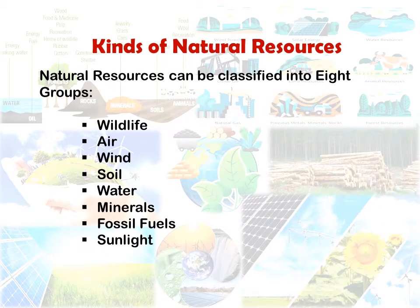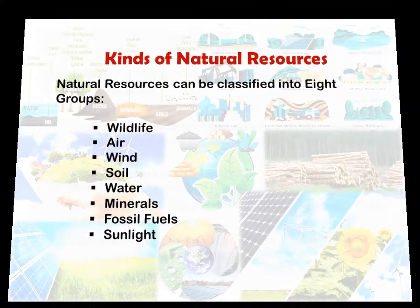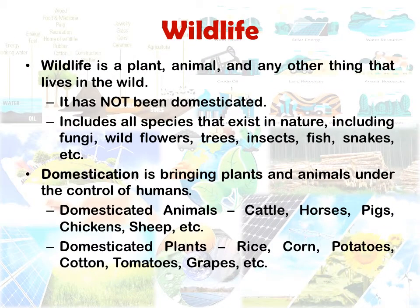There are different types of natural resources, divided into eight groups: wildlife, air, wind, soil, water, minerals, fossil fuel, and sunlight. Regarding wildlife, the key difference is that wildlife cannot be domesticated — animals under human control are considered domesticated.